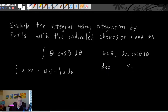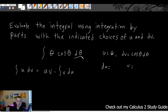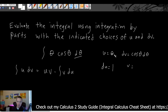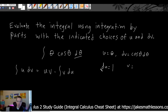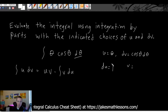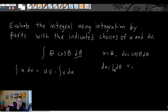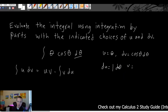To find du, just take the derivative of u. The derivative of theta with respect to theta is 1 — we know the variable is theta because of the dθ at the end of the integral. The dθ is really just an indicator of what our variable is. So du equals 1 dθ. You put a dθ alongside your du and dv terms as indicators of the variable. Since it's dθ here, we use dθ throughout.